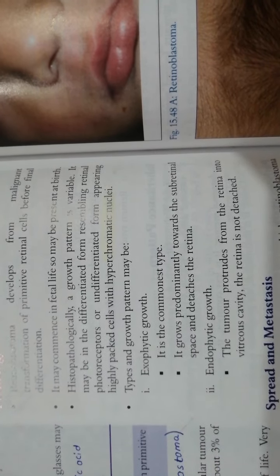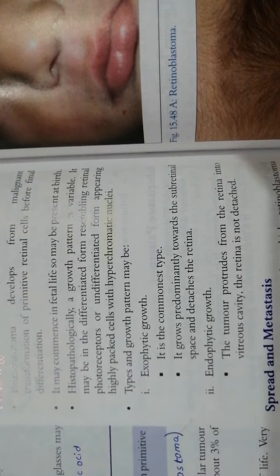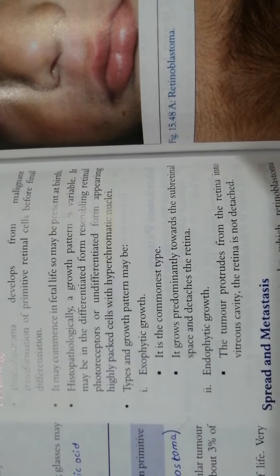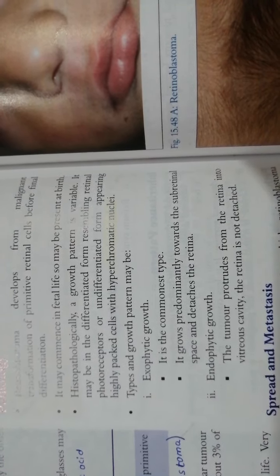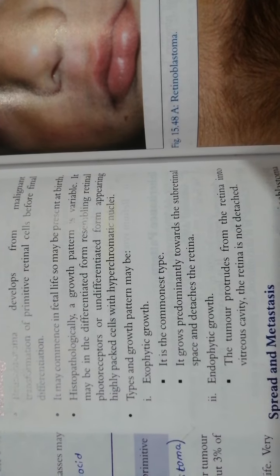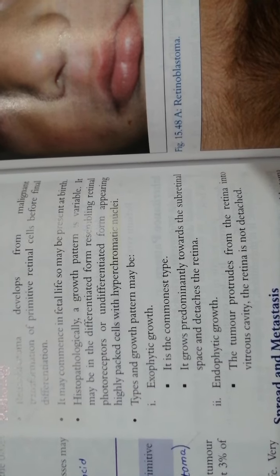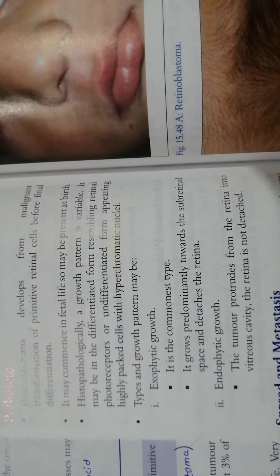If this tumor arises in retina, it can grow into the vitreous cavity. If it grows in vitreous cavity, then we call it endophytic pattern. But if, for example, this tumor grows towards the choroid or into the subretinal space, then we call it exophytic pattern.